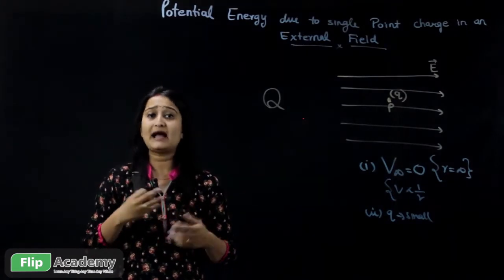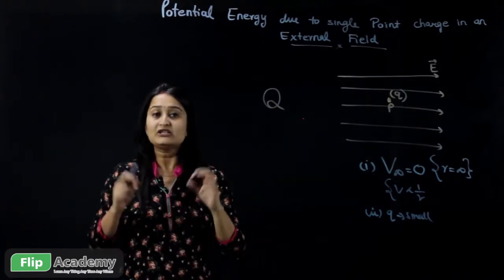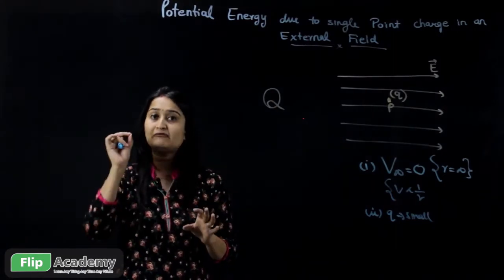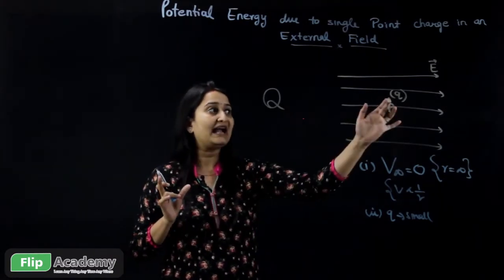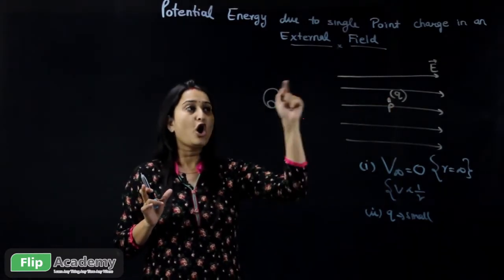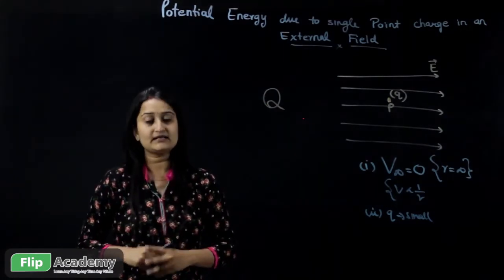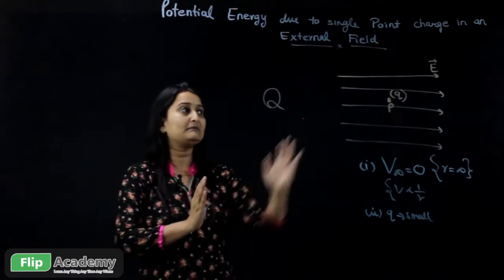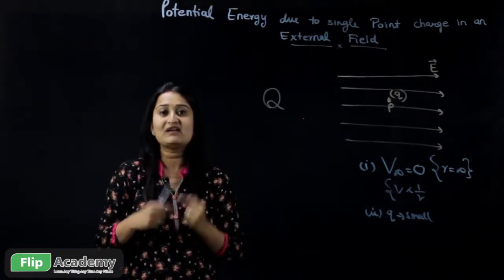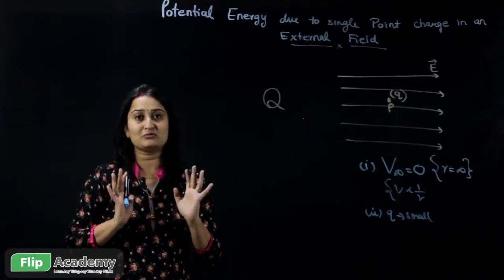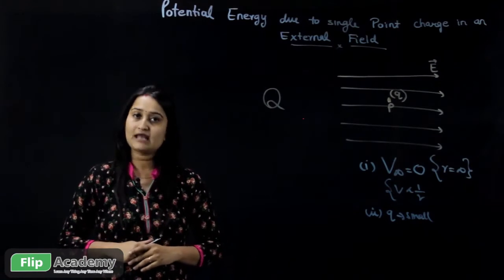In case this charge Q does produce some effect on the electric field, we have to neglect that effect. In order to ensure that the electric field created by this charge is neglected, we consider it to be very, very small. If it is very small, the influence created is also very small. Now moving on to the derivation part.